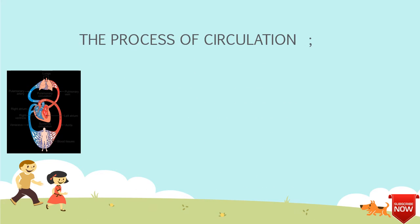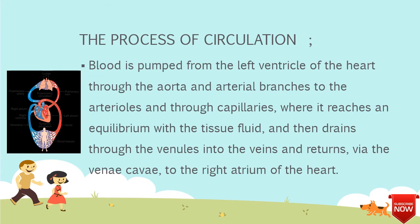The process of circulation. Blood is pumped from the left ventricle of the heart through the aorta and its branches to the arterioles, and through capillaries where it reaches an equilibrium with the tissue fluid. Then it drains through the venules into the veins and returns via the vena cava to the right atrium of the heart.